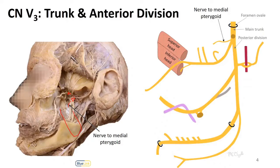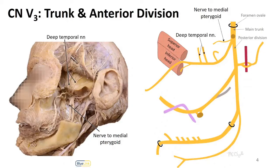The medial pterygoid muscle is that which you can see outlined here. Now let's talk about that anterior division. This is really important in terms of these muscles and mastication. Most of the branches of the anterior division are going to be motor branches going to these muscles. The first ones we see are the deep temporal nerves, and what those look like in a donor is always going to be deep to the temporalis muscle. We'll usually see an anterior and a posterior branch like we do here.